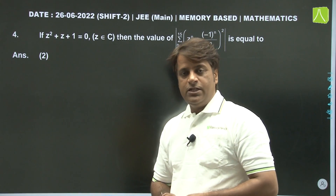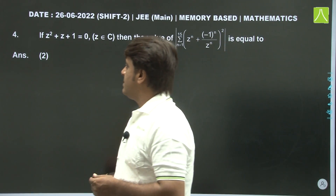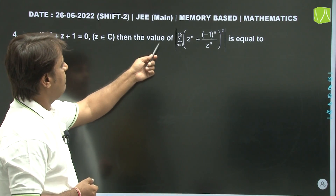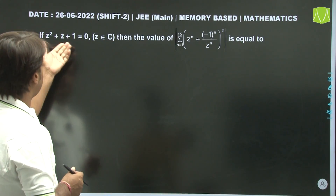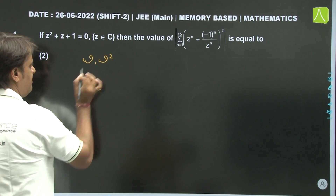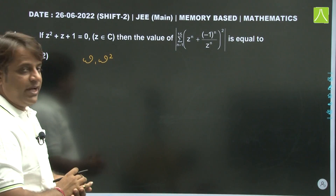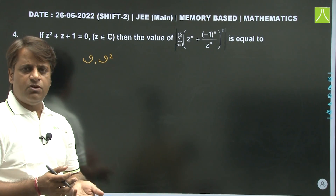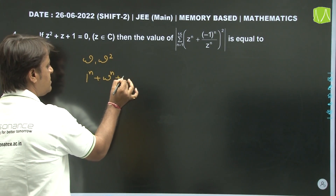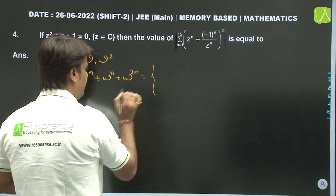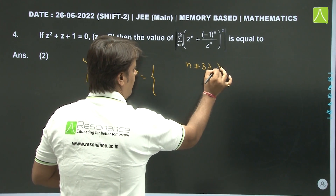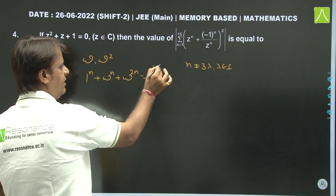Question 4 is from complex numbers. If z² + z + 1 = 0, where z is a complex number, then find the value of a given expression. The roots of z² + z + 1 = 0 are ω and ω², the imaginary cube roots of unity. We know the property: 1ⁿ + ωⁿ + ω²ⁿ = 0 when n is not a multiple of 3, and = 3 when n is a multiple of 3.